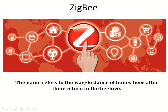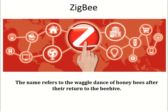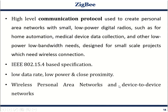First of all we should understand where the name Zigbee has come from. The name refers to the waggle dance performed by honeybees when they return to their beehives. The honeybees always return home following a zigzag path, and that information is transferred to other bees who follow the same path. Basically, Zigbee protocol means that communication is completed through any available path — whether path one, two, three, or any other — and communication has to be successful.